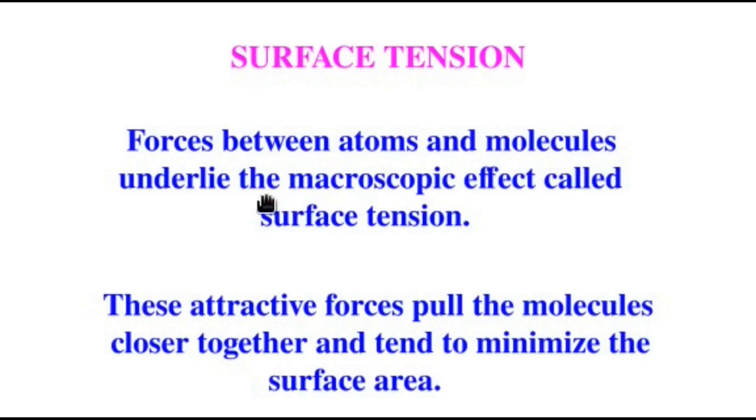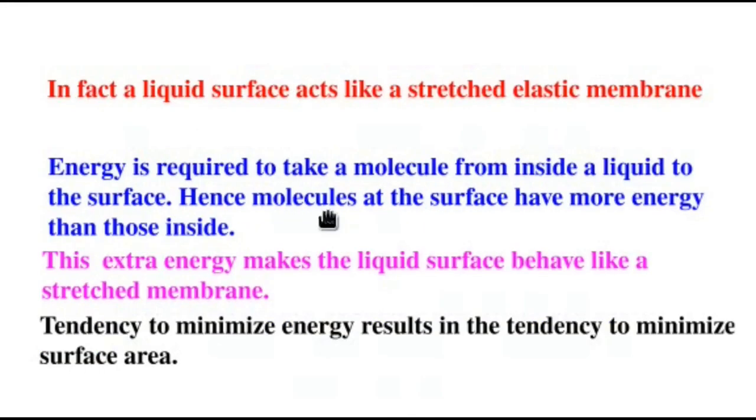Now, the forces between atoms and molecules underlie the macroscopic effect called the surface tension. These attractive forces pull the molecules closer together and, therefore, there is a tendency to minimize the surface area. In fact, a liquid surface acts like a stretched elastic membrane. That is, energy is required to take a molecule from inside a liquid to the surface. Therefore, the molecules of the surface have effectively more energy than those molecules which are inside the liquid. Now, this extra energy is what makes the liquid surface behave like a stretched membrane. It is really the general tendency of any physical system to attain the lowest energy status. That means, to minimize the total energy of the system which results in the tendency to minimize the surface area.